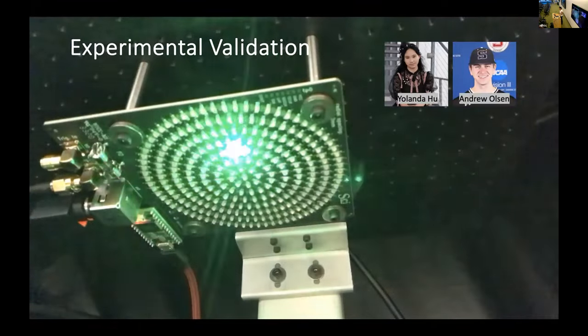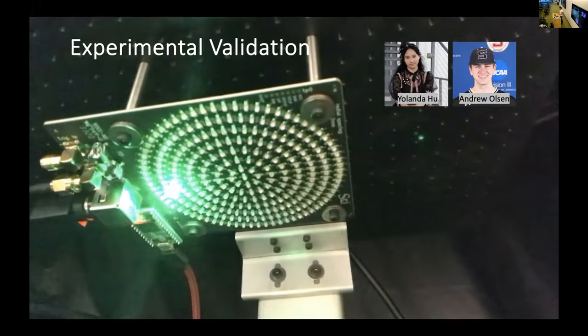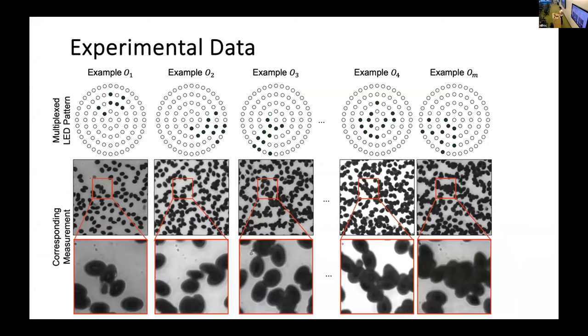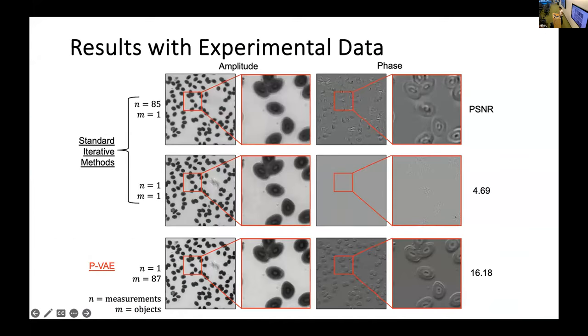And so then I had two students, Yolanda and Andrew do some experimental validation for this idea. And they first took a baseline measurement. So a single LED illumination per image, and they took 85 images for a single field of view. And then they took another set of data where they had different random patterns for every single field of view. So they had about 85 different total fields of view and trained the physics informed variational autoencoder. And what's interesting is that with the physics informed variational autoencoder, they were able to get phase contrast that was not available with a standard iterative method.